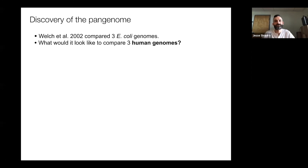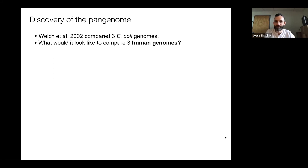I'm going to start with a little bit of history — the discovery of the pangenome, the concept that different members of a species can encode different sets of genes. This dates back to the early 2000s. In 2002, a study by Welch et al. compared three E. coli genomes that had been sequenced and looked at the number of shared genes between them. I'm going to start with a question you can think about or throw out answers in the chat.